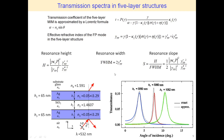Consider the planar MIM structure here. The structure is deposited on a substrate of glass K8. The stack consists of two metal layers of silver separated by a dielectric layer of quartz. A plane wave of wavelength 532 nm is incident in air onto the structure at incidence angle theta. To demonstrate the fitting of the resonance line shapes, we compare the exact transmission spectra obtained by the transfer matrix method and spectra of the approximation based on the Lorentz function.